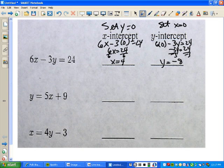So for the next one, to find the x intercept for this one, y equals 5x plus 9. Again, you're going to set y equal to 0. So 0 equals 5x plus 9.